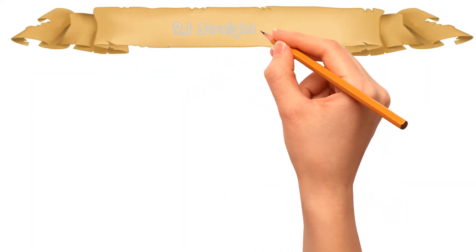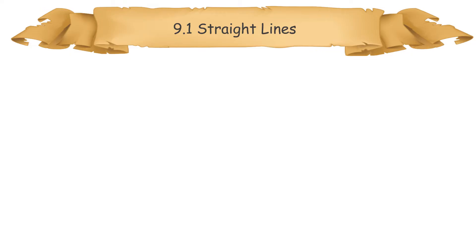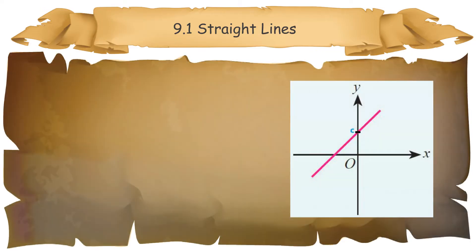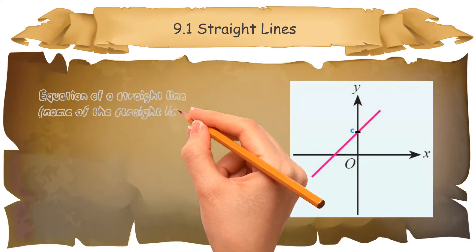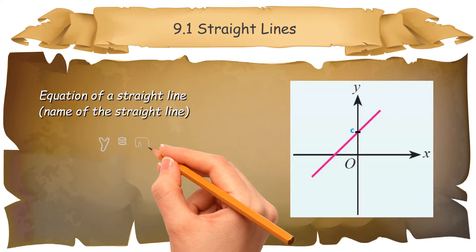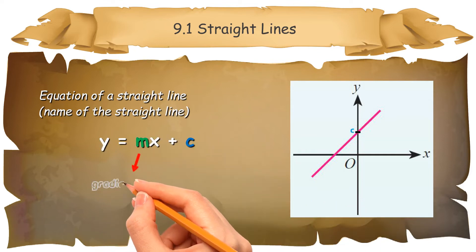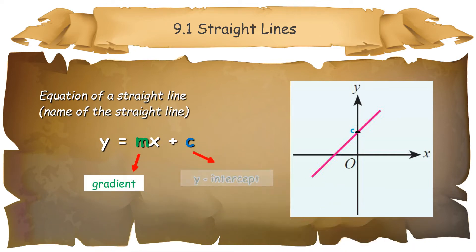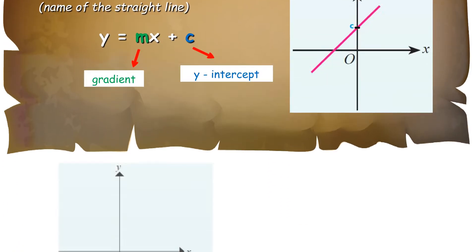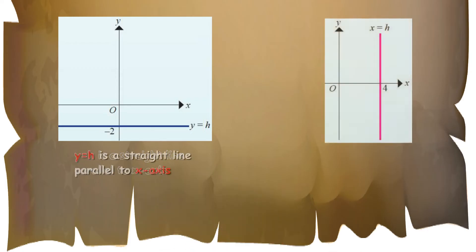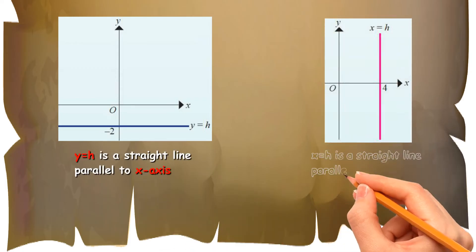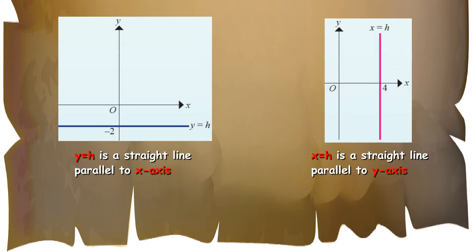9.1 Straight Lines. The equation of a straight line is y equals mx plus c, where m is the gradient and c is the y-intercept. The graph of function y equals h is a straight line parallel to the x-axis. The graph of function x equals h is a straight line parallel to the y-axis.